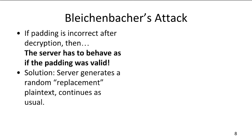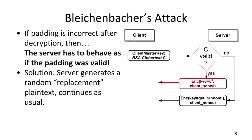Here in graphic form: when the client sends an RSA ciphertext to the server, if it's valid, the server decrypts it and uses the plaintext as the key for upcoming symmetric messages. But if it's invalid, the server generates a random replacement — a decoy — and uses that as the key for upcoming symmetric messages.